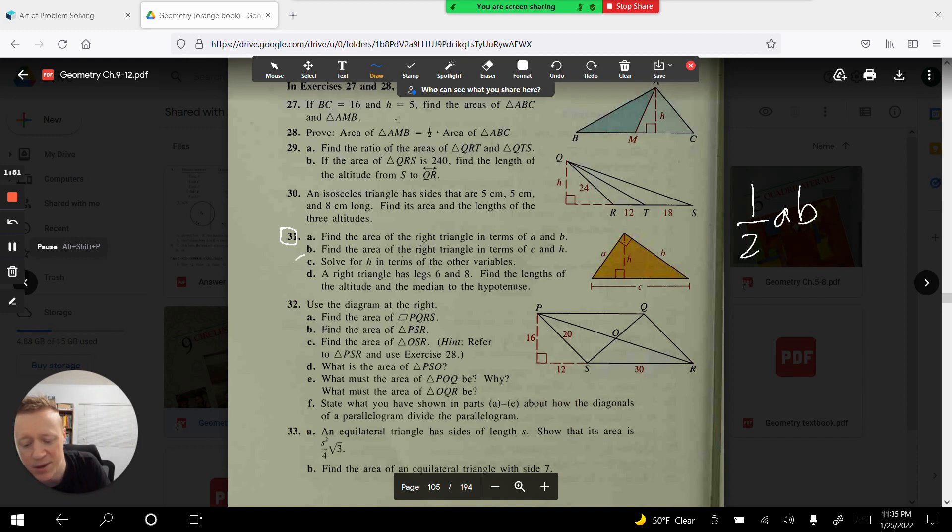Now, find the area part B in terms of C and H. Well, that's also going to be half base times height, which in this case the base will be C and the height will be H. Then it has you do something that many modern textbooks wouldn't even have you do and that is to explore.